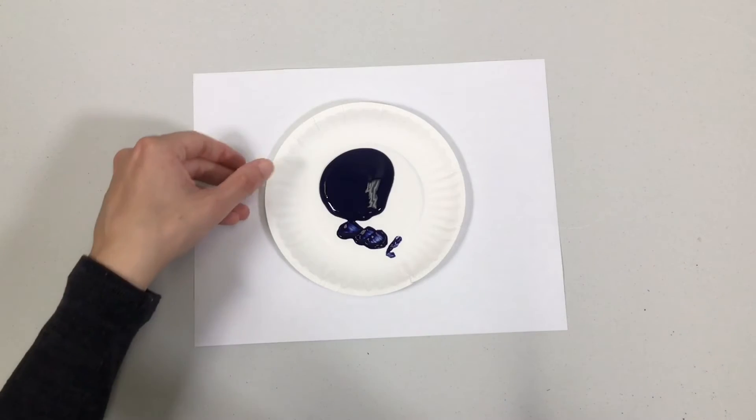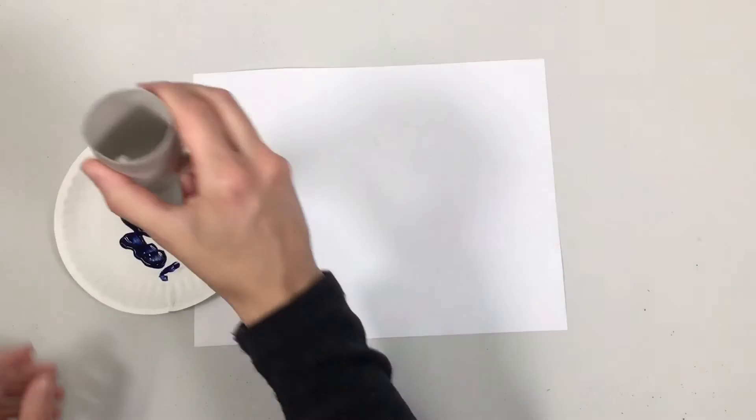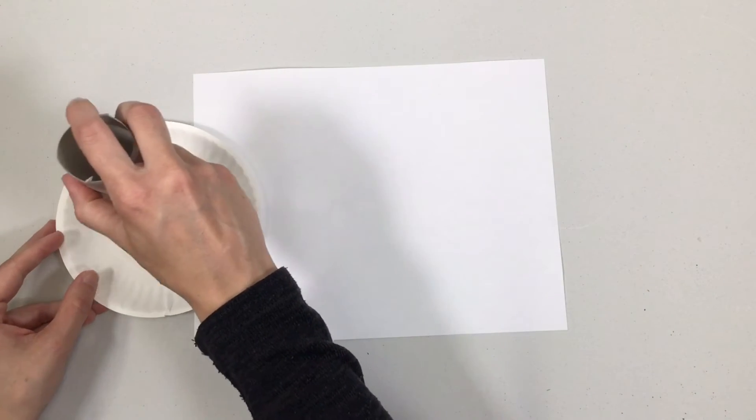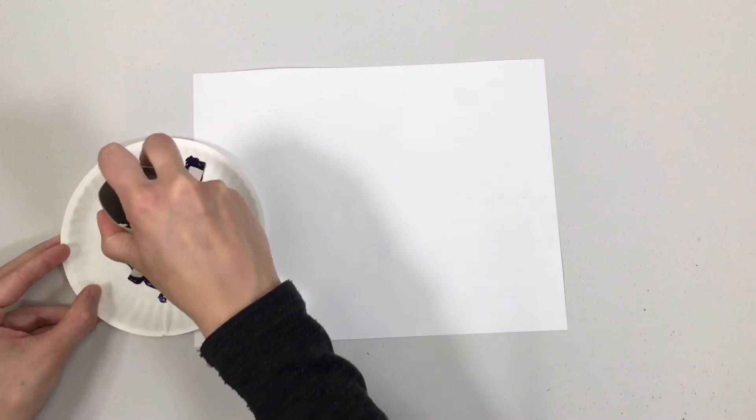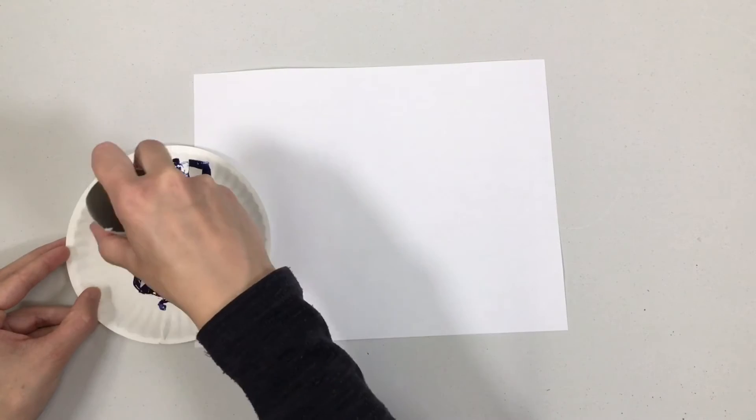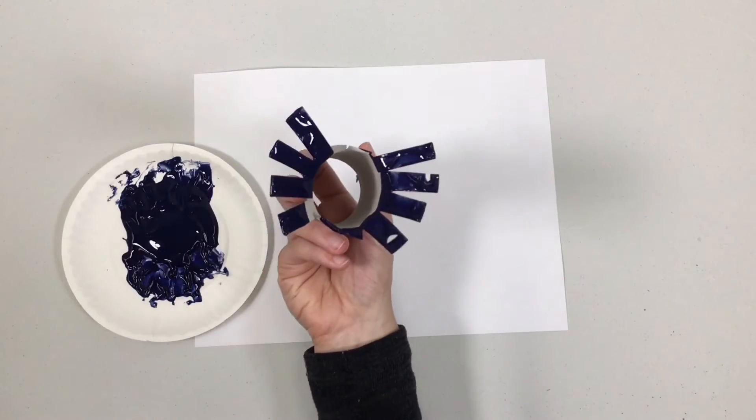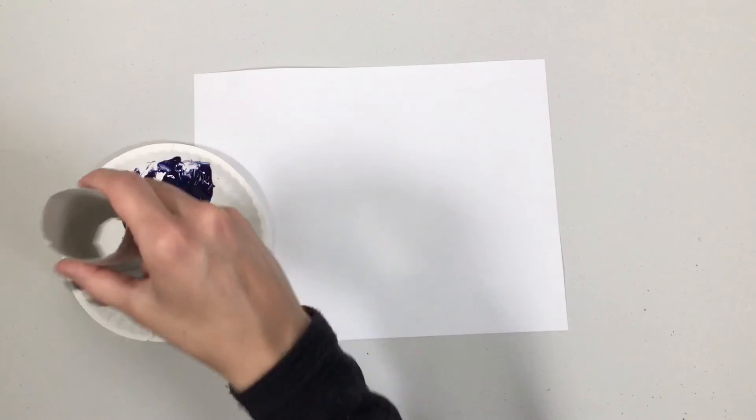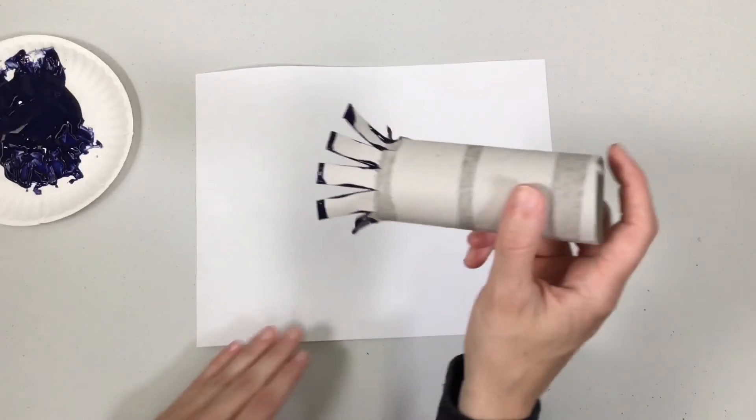So now here comes the fun part. You're going to take this and you're going to dip it in the ends and kind of squish it down like this all the way down. Fill it all up with paint. It's going to be kind of messy. So you've got it all filled up with paint like this. Then you're going to stamp it onto your paper.